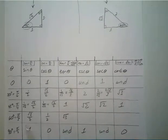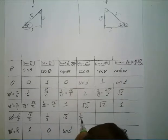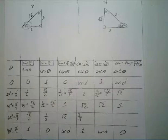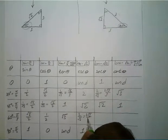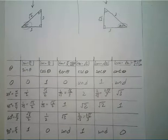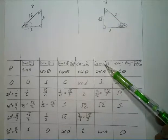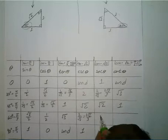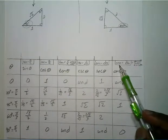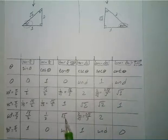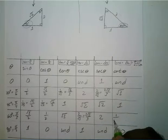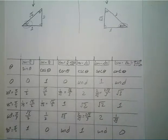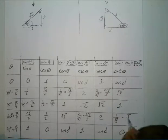Cosecant is the reciprocal of sine: square root of three over two flipped is two over square root of three, rationalized to two square root of three over three. Secant is the reciprocal of cosine: one half flipped is two. Cotangent is the reciprocal of tangent: square root of three over one flipped is one over square root of three, rationalized to square root of three over three.